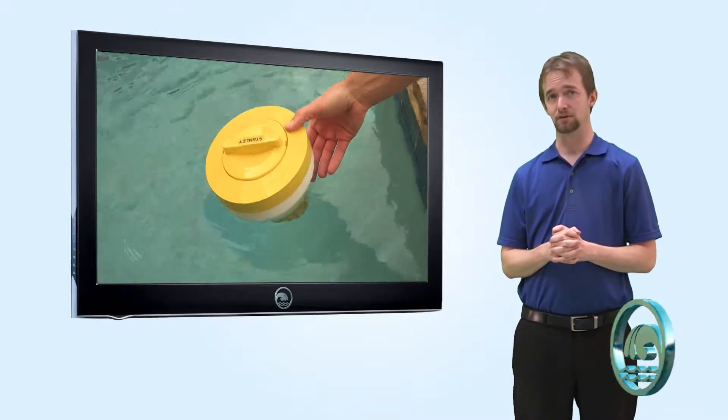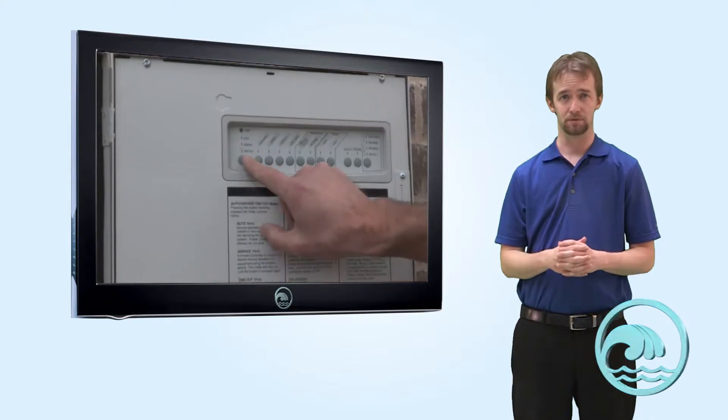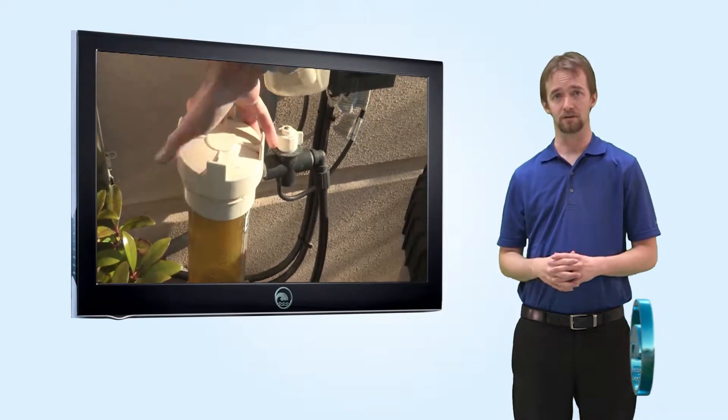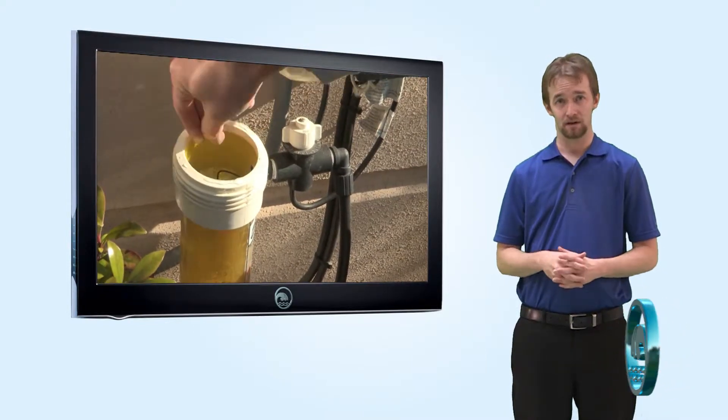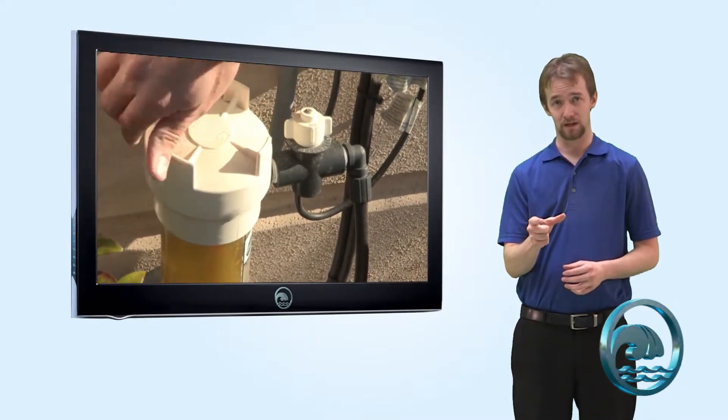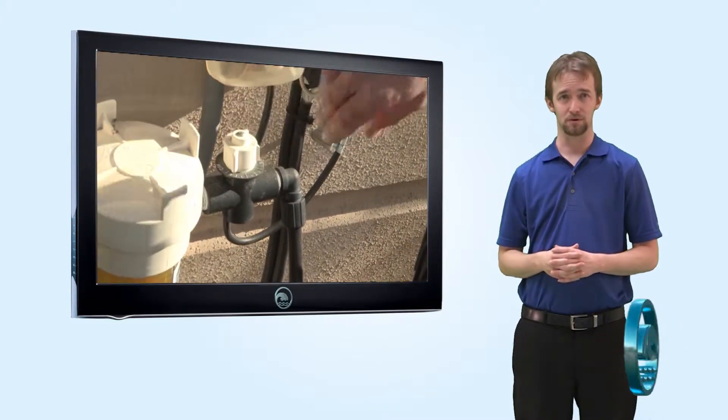If you have a chlorine feeder that sits on your equipment, you're going to want to put the pool in service mode to turn off the filter pump. Unscrew the lid on the chlorinator, add the appropriate amount of tablets, screw the lid back on, ensure that your water flow gauge is set to the appropriate reading, and then return the filter pump to normal circulation.